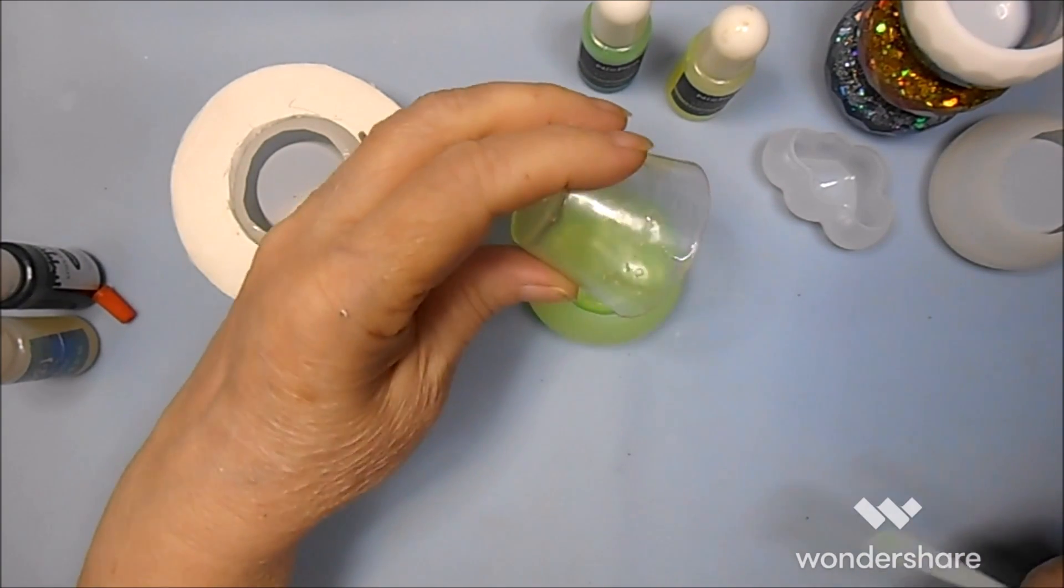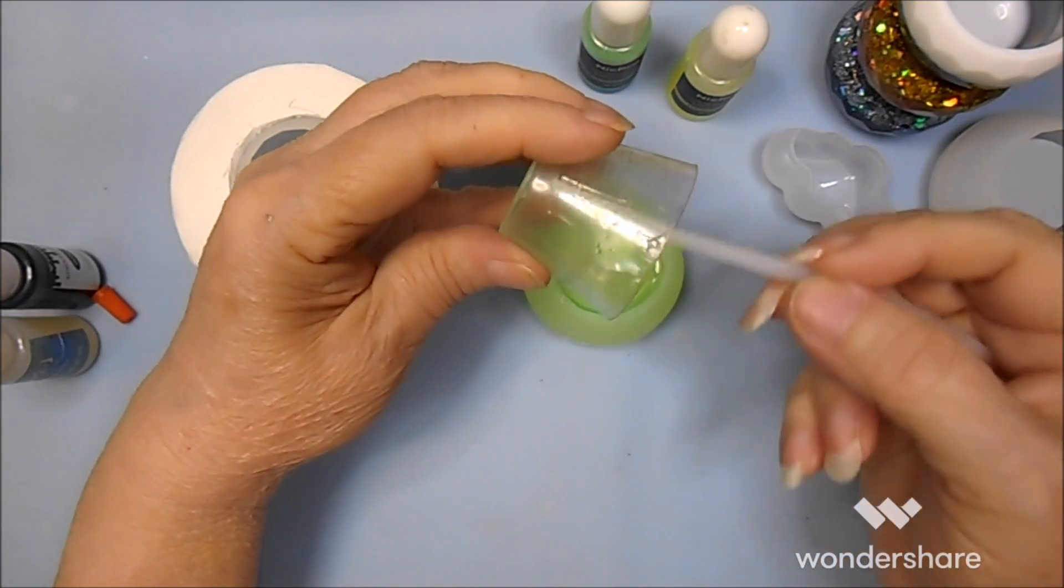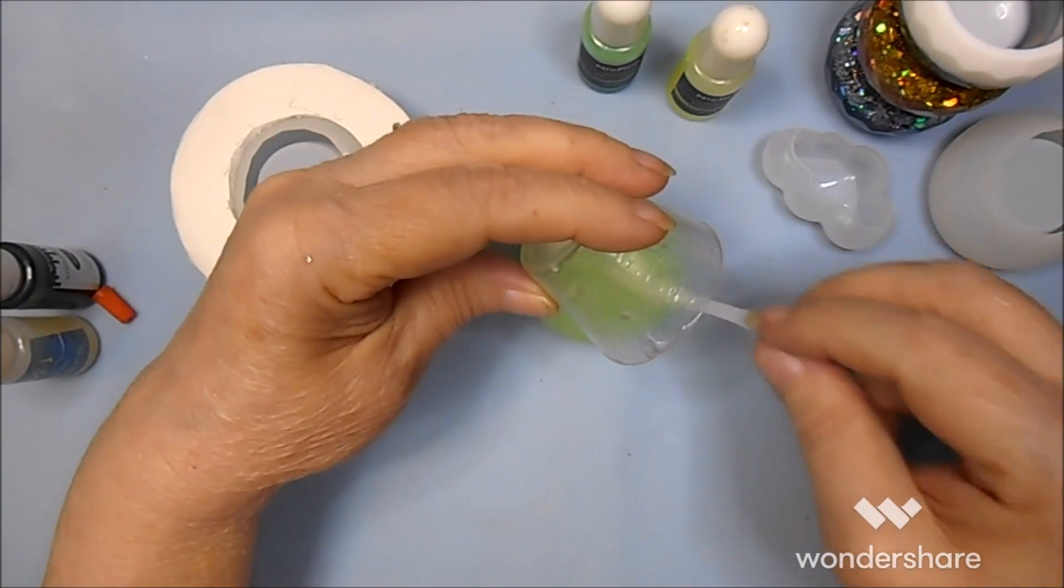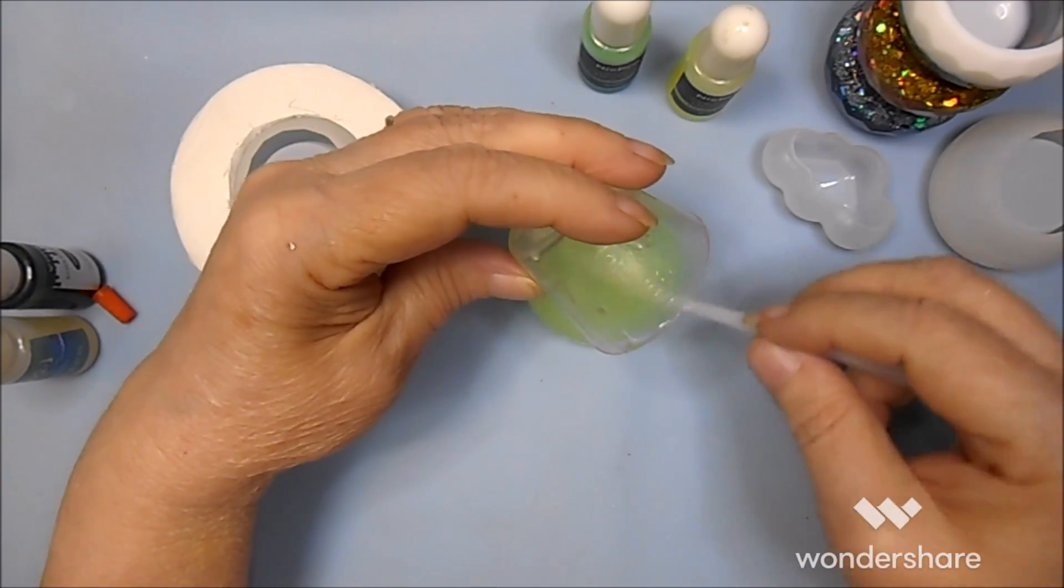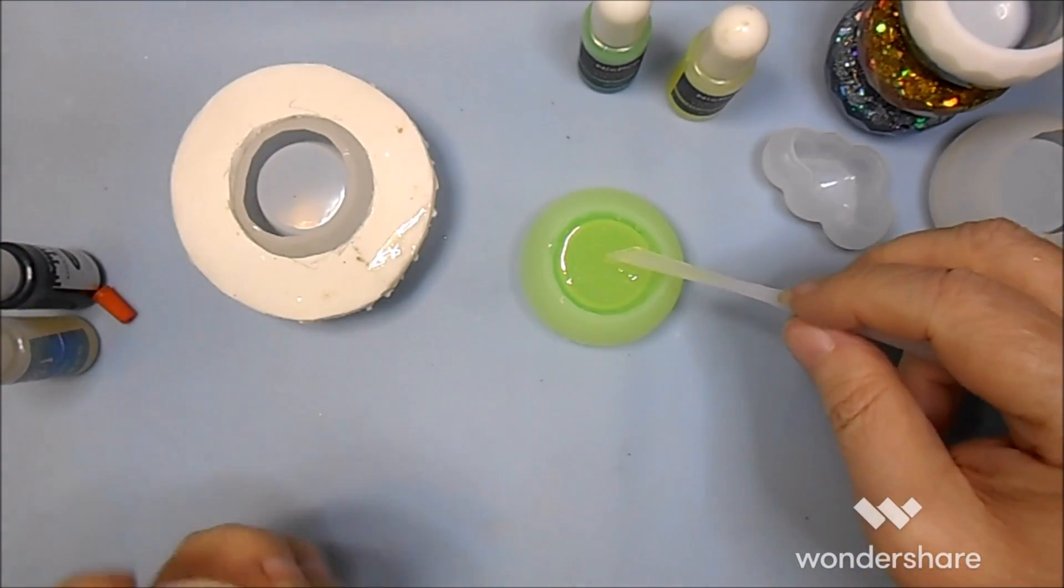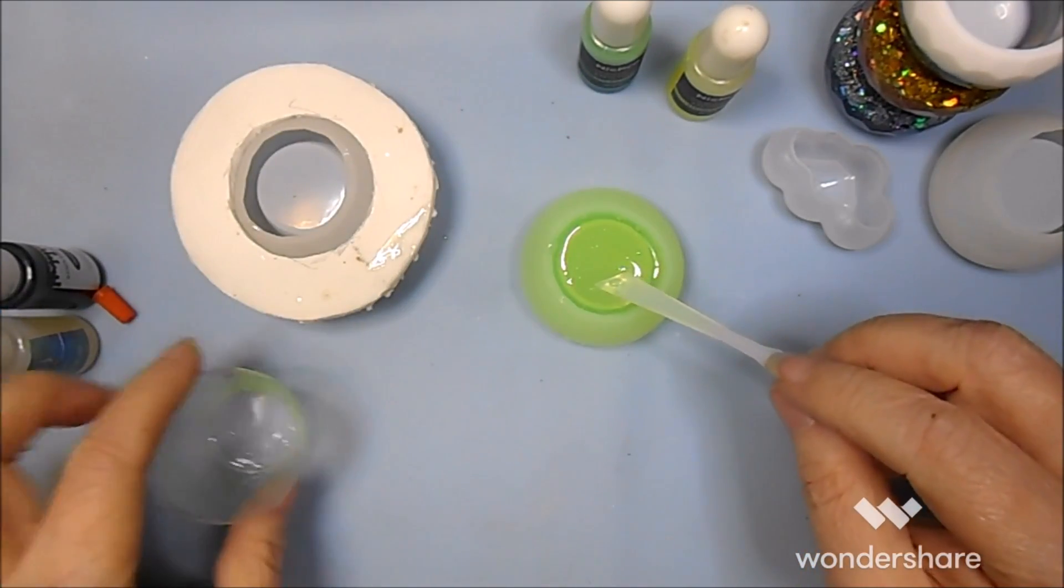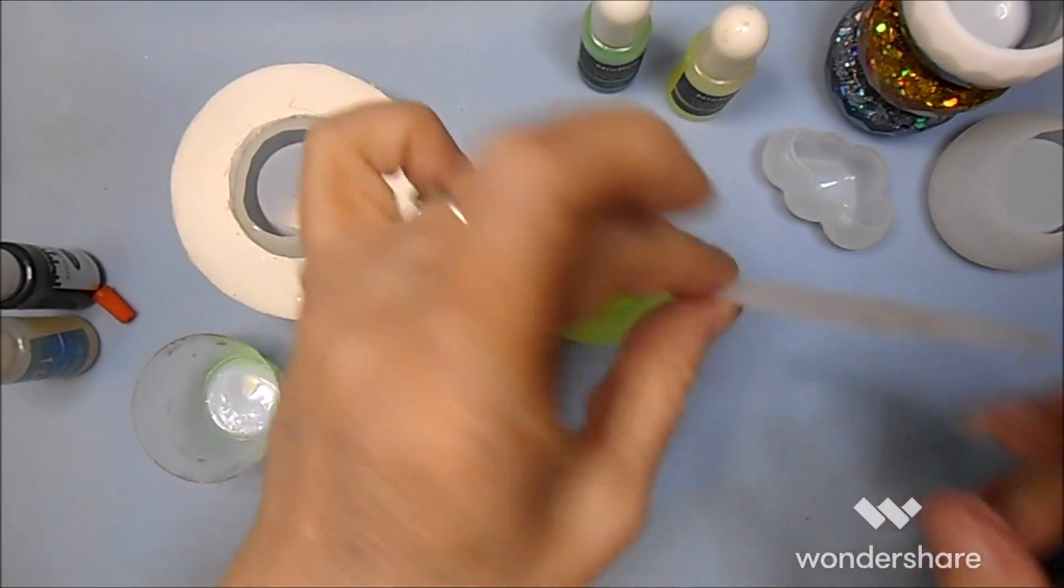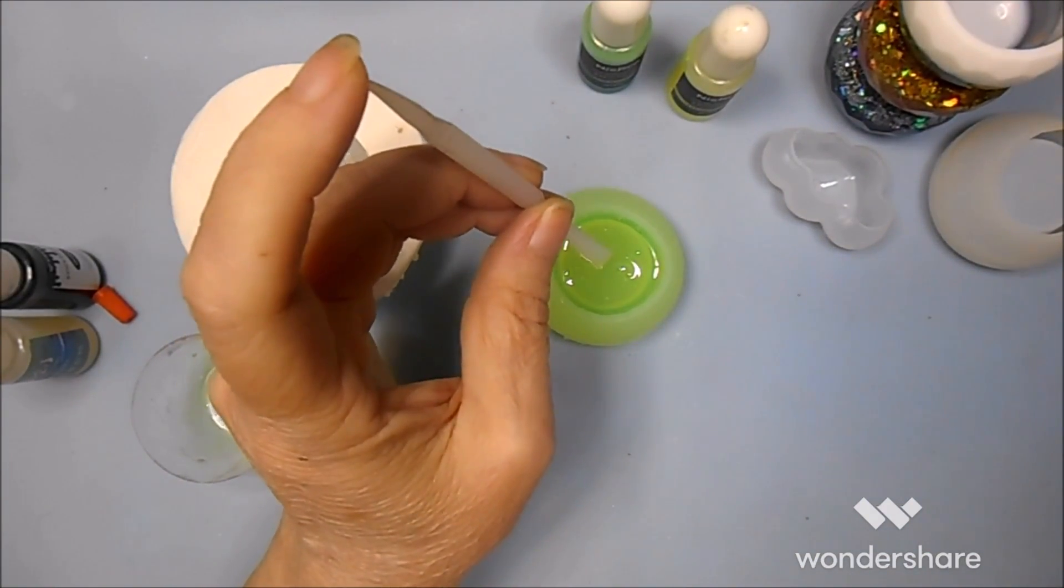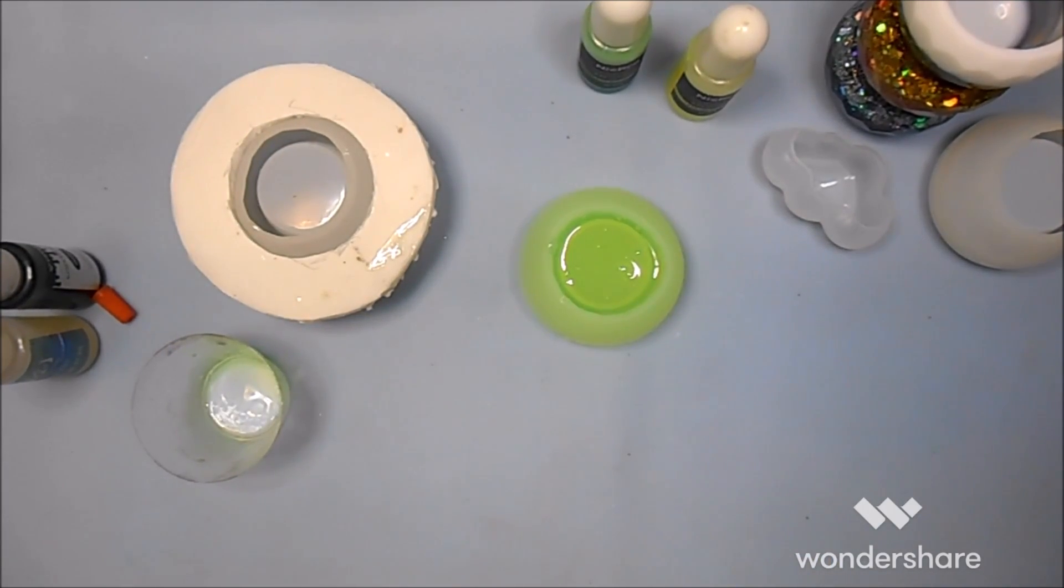Now, I get a little intimidated when I'm stirring a full cup of resin with colorant. I don't know why, with the silicone mat under it I don't fear spilling or anything.